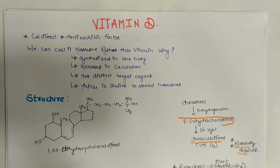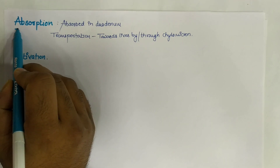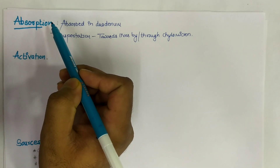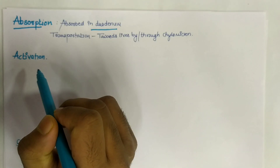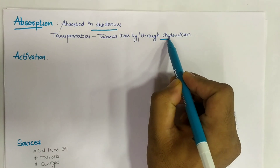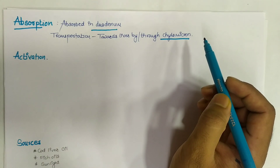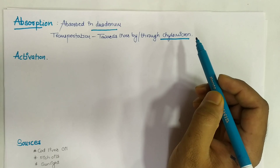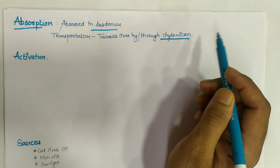The artificially obtained vitamin D from ergosterol is known as ergocalciferol. Vitamin D is absorbed in the duodenum, and transportation to the liver occurs via chylomicrons because it is a lipid-soluble vitamin attached to lipids.